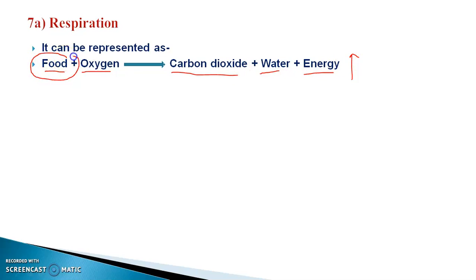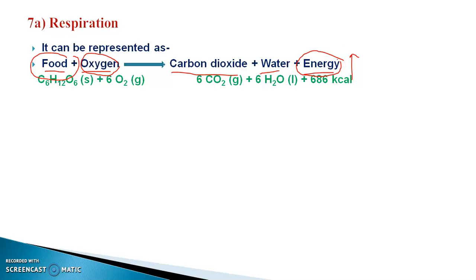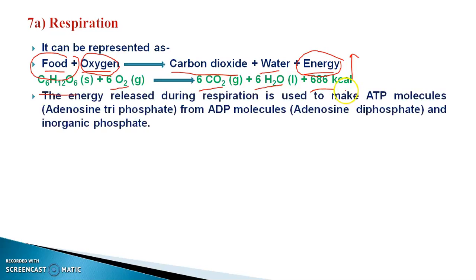This food is burnt inside the cell with the help of oxygen and converts into carbon dioxide. We can also represent this equation with the molecular formula: C6H12O6 — that is glucose in solid form — reacts with six molecules of O2 gas. After the reaction of glucose and oxygen, it converts into six molecules of CO2 gas, six molecules of H2O in liquid form, and generates 686 kcal of energy. This energy released during respiration is used to make ATP molecules.